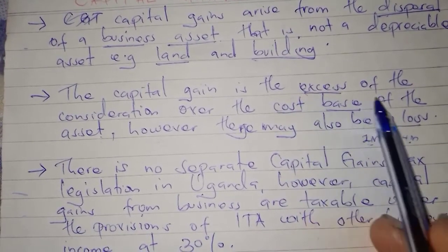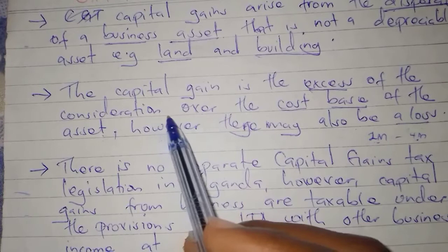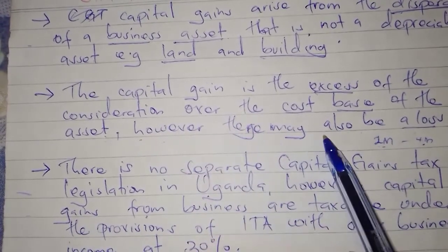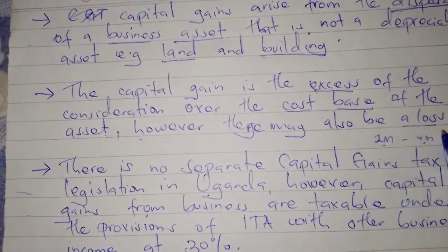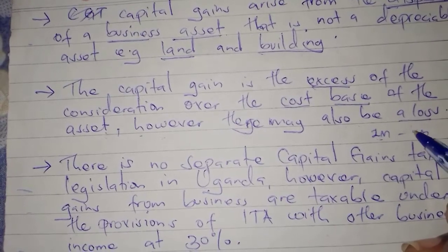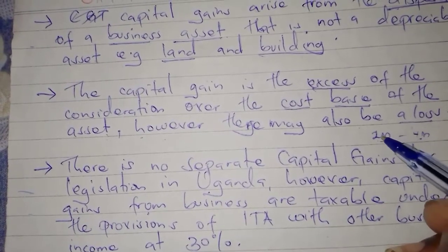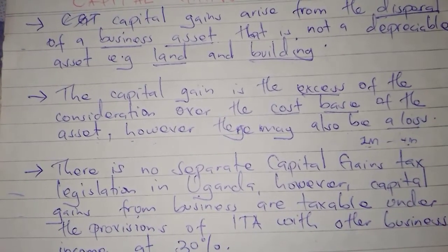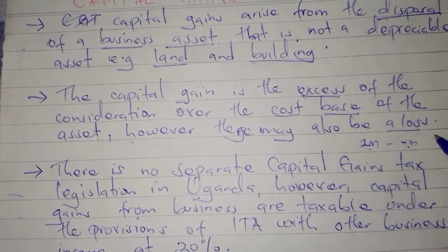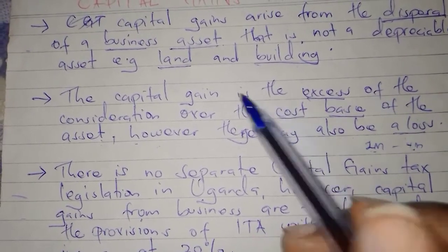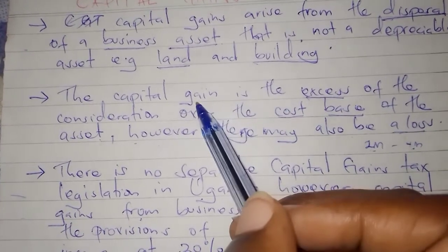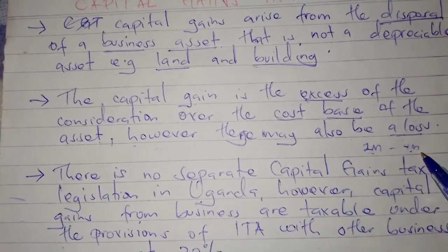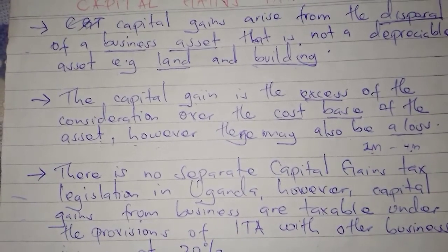There may also be a capital loss. For example, if an asset is worth 4 million and you sell it at 2 million, that is a capital loss. The loss is not taxed, but a capital gain is taxed.